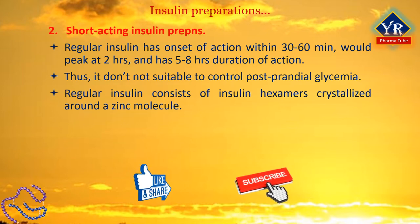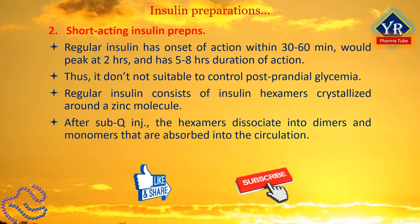Regular insulin consists of insulin hexamers crystallized around a zinc molecule. After subcutaneous injection, the hexamers dissociate into dimers and monomers that are absorbed into the circulation. It is often absorbed too slowly to prevent postprandial hyperglycemia while causing hypoglycemia later, thereby necessitating a snack and contributing to weight gain. Hence, a rapid-acting insulin preparation is usually more effective for pre-meal use and may contribute to a greater reduction in A1C levels than regular insulin.